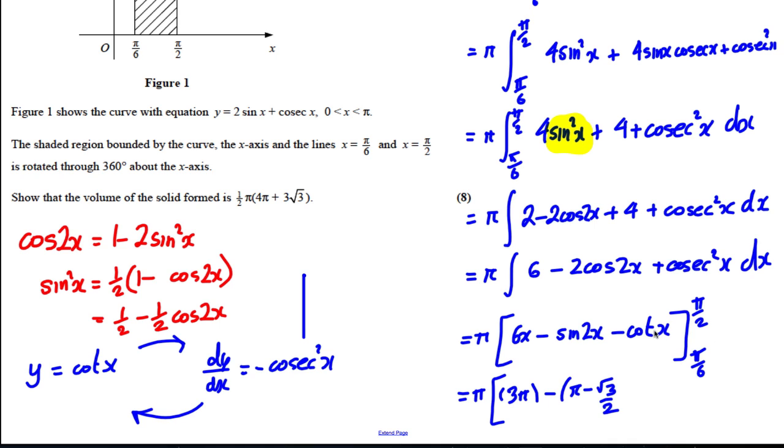And if you put pi by 6 in here, tan of pi by 6 is root 3 over 3, so the inverse of that is simply root 3. So I'm going to subtract root 3.